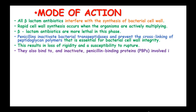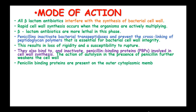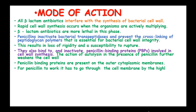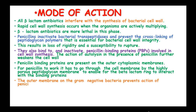Penicillins also bind to and inactivate penicillin-binding proteins, which are involved in cell wall synthesis, and the action of autolysins in the presence of penicillin further weakens the cell wall. Penicillin-binding proteins are present in the outer cytoplasmic membranes. For penicillin to work, it has to go through the cell membrane via the highly porous peptidoglycan layer to enable the beta-lactam ring to interact with the binding proteins. The outer membrane of gram-negative bacteria inhibits the passage of larger penicillin molecules.